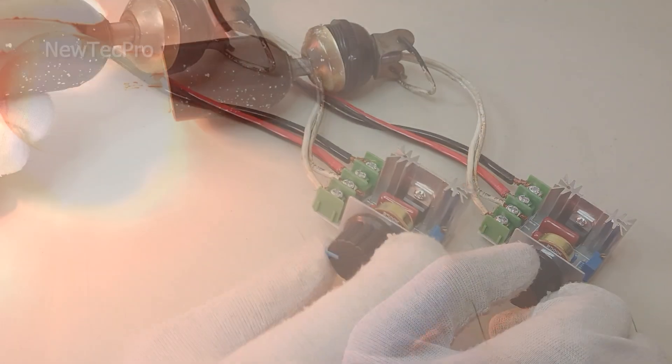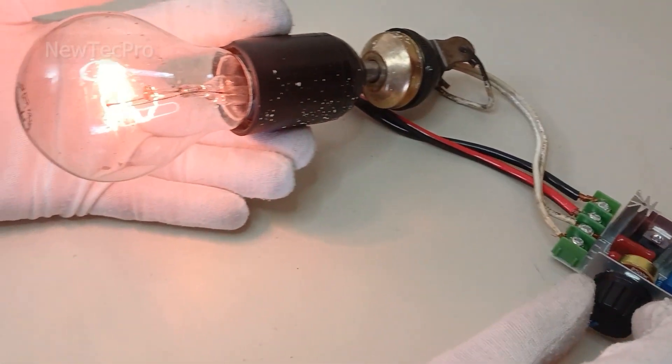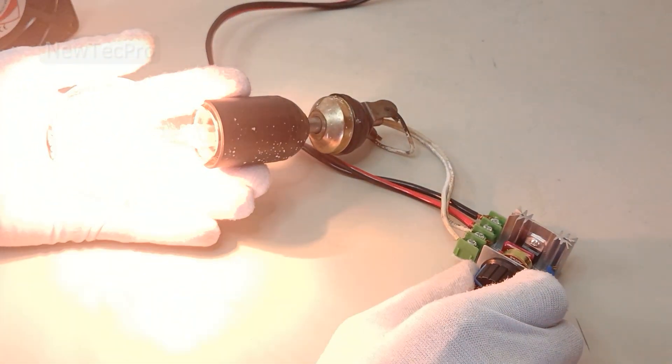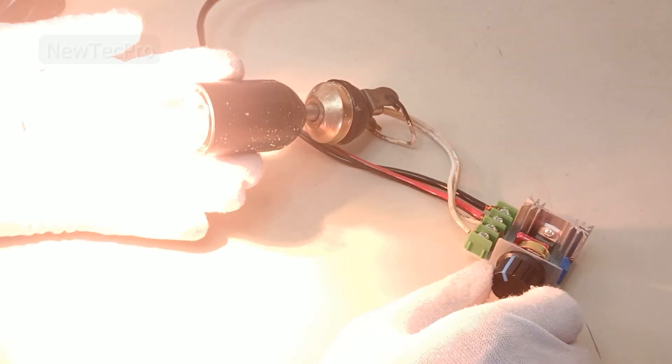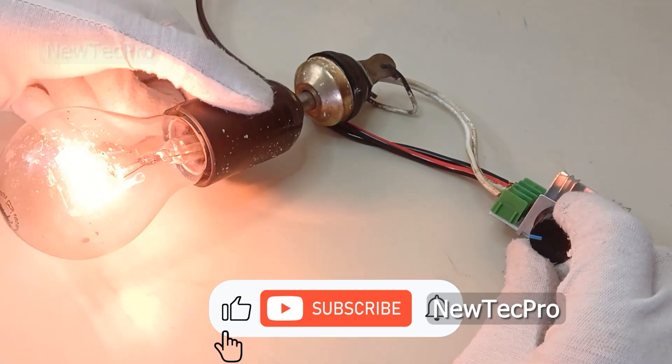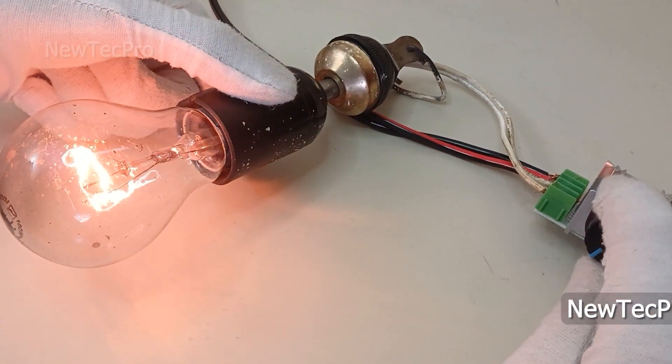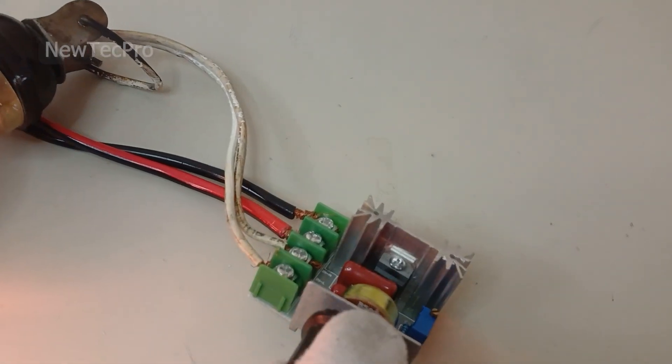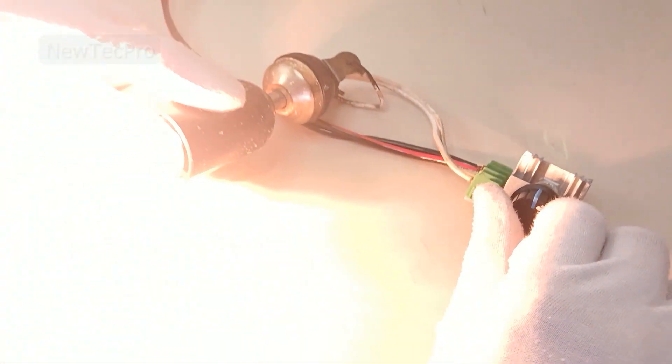And there you have it - a quick and easy way to use a 2000 watt AC 220 volt dimmer with a bulb. Don't forget to like, comment and subscribe for more tech videos, tips and tutorials. See you next time. Thank you very much and goodbye!